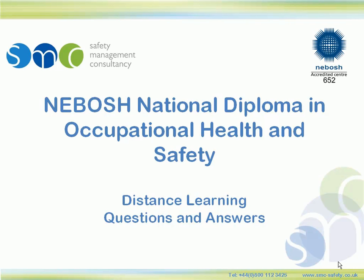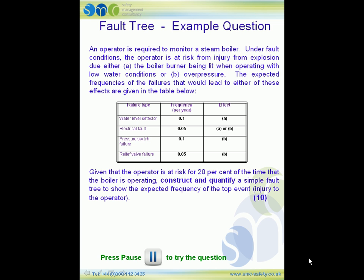Let's take a quick look at a question. The question relates to a fault tree and is worth 10 marks. It reads: an operator is required to monitor a steam boiler. Under fault conditions, the operator is at risk from injury from explosion due to either condition A — the boiler burner being lit when operating with low water conditions — or condition B — over pressure. The expected frequencies of the failures are given in a table. For condition A, the water level detector fails at a frequency of 0.1 per year, or an electrical fault at a frequency of 0.05 per year.